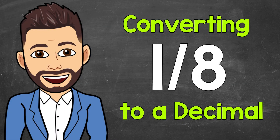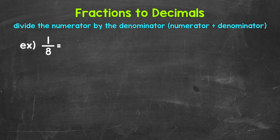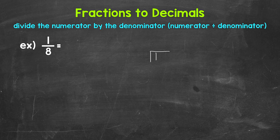Welcome to Math with Mr. J. In this video, I'm going to cover how to convert 1/8 to a decimal. When we convert a fraction to a decimal, we can do this by dividing the numerator — the top number of the fraction — by the denominator, the bottom number of the fraction. So for 1/8, we can set this up as 1 divided by 8.